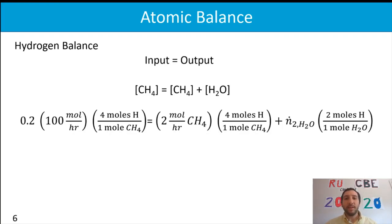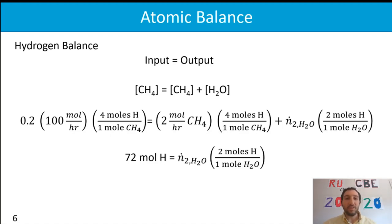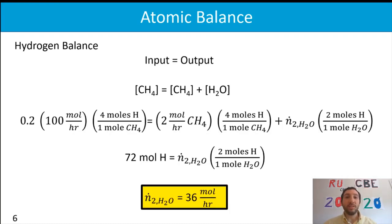Performing the calculations, we find there are 72 moles of hydrogen on the input side, which must equal the hydrogen present in water in stream two. Solving for N₂H₂O, we get 36 moles per hour of water exiting our system — the same result we got from the molecular species calculations.